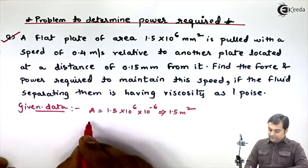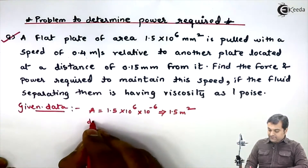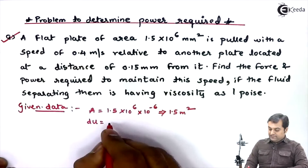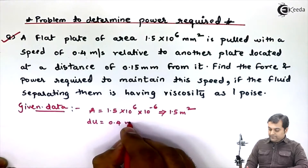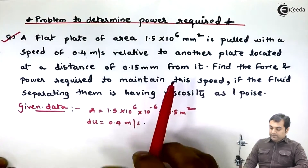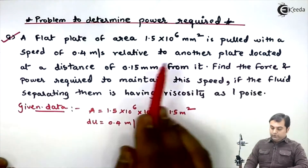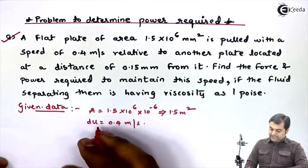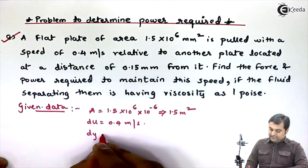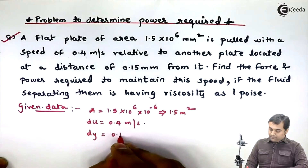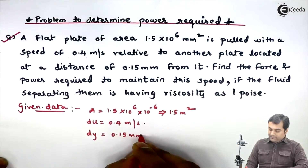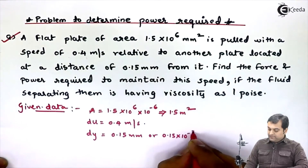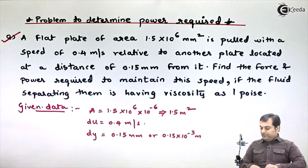The plate is pulled with velocity — this is the change in velocity du — and since only one velocity is given, that is 0.4 m/s. The distance to the other plate is dy = 0.15 mm, or 0.15×10⁻³ m.